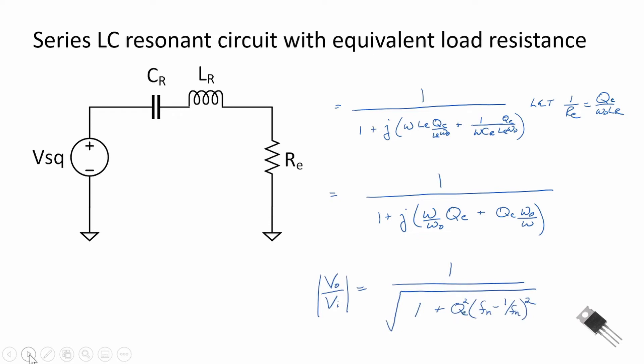Finally, if we substitute F sub N, our normalized frequency, into the equation, we obtain that the magnitude of our input-output is equal to 1 over the magnitude of the denominator, which is 1 plus QE squared times FN — our normalized switching frequency minus the reciprocal of our normalized switching frequency 1 over FN — that quantity squared as well.